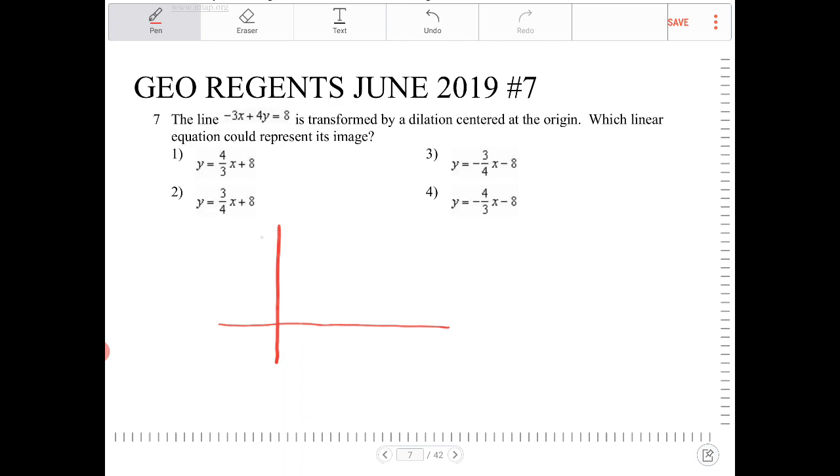Let's say if I have a line and we're dilating this over the origin. Picture this with me. Can you see that this line and the axis that I've drawn here, it forms a triangle, right?